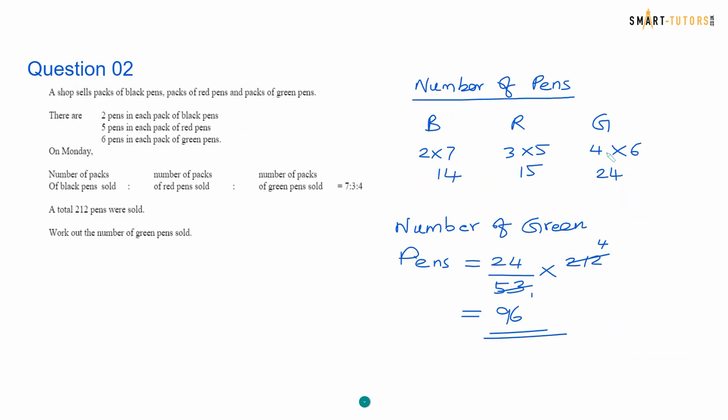Question number 2. A shop sells packs of black pens, packs of red pens and packs of green pens. The ratio of the number of packets sold in a day to the black and red and green is 7 is to 3 is to 4. Total pen sold is 212 and work out the number of green pens sold. The ratio is 14 black pens because 7 times 2, 15 because 3 times 5, and 6 times 4 is 24. If I add everything, it's going to be 53. So out of 53 pens, 24 are green times 212. 53 goes into 4 times and 4 times 24 is 96.